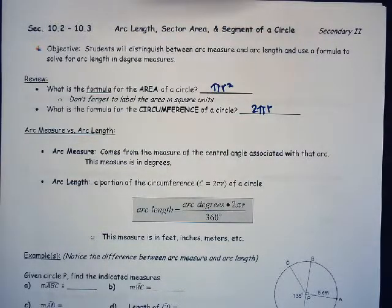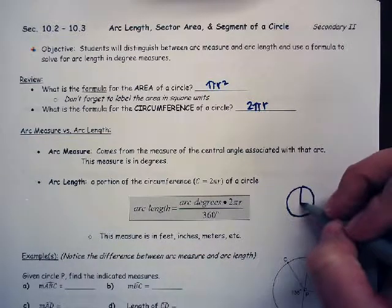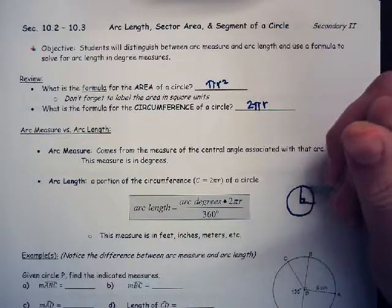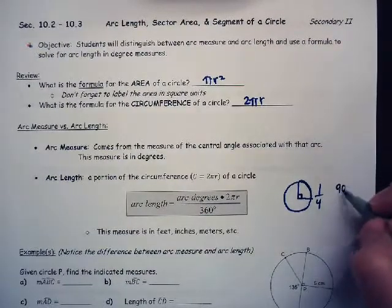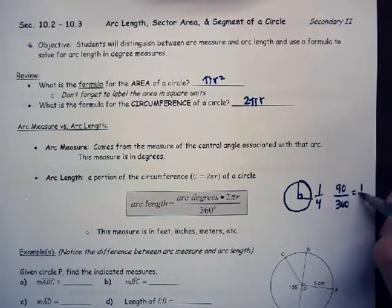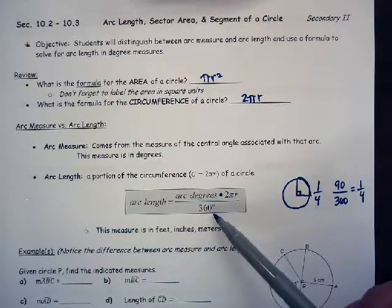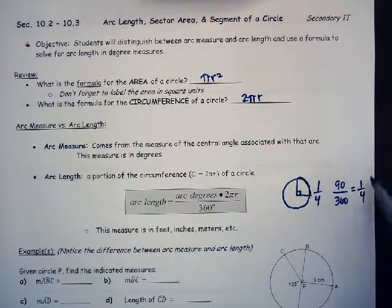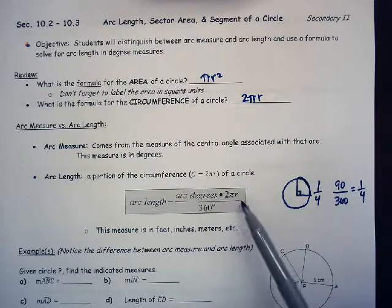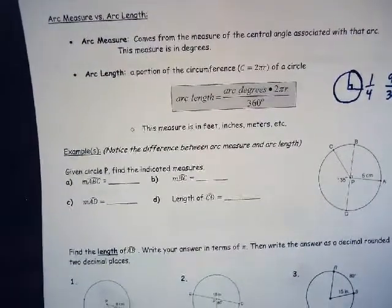If we have a circle with a 90-degree angle, what portion of the circle would that arc length be? We can see it would be one-fourth of the circumference. Another way to see that: 90 divided by 360 is also one-fourth. That's why the formula takes arc degrees divided by 360 — that gives us the fraction of the circle — then multiplied by the full circumference 2 pi r. So in this example, we'd be taking one-fourth of the circumference 2 pi r. That's where the formula is derived.